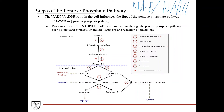The main takeaway from the non-oxidative phase is that it produces glyceraldehyde 3-phosphate and fructose 6-phosphate, which are both used in glycolysis. There is no NADPH produced in the non-oxidative phase. Just like the NAD+/NADH ratio influences the flux of other metabolic processes, the NADP+/NADPH ratio influences the flux of the pentose phosphate pathway. Increased levels of NADPH will decrease flux through the pathway.